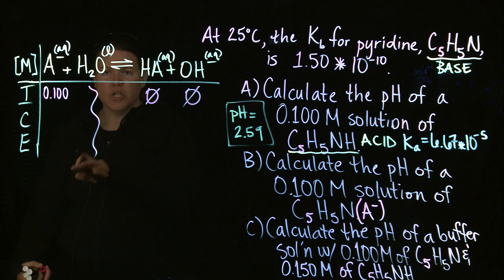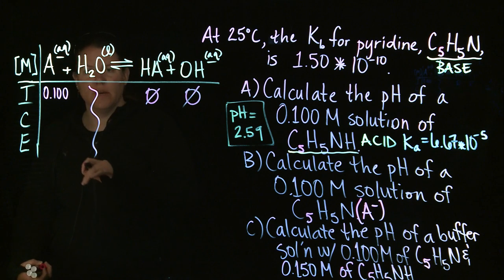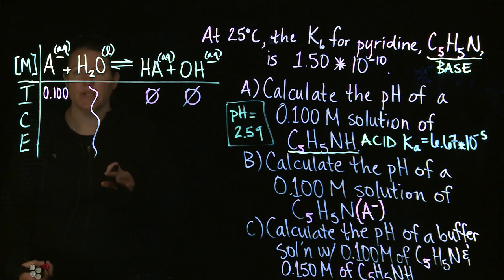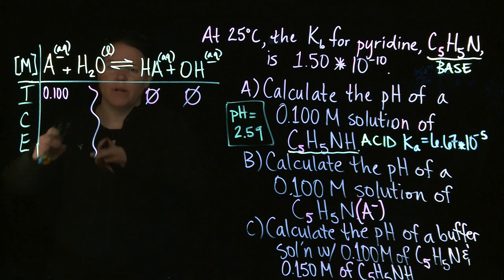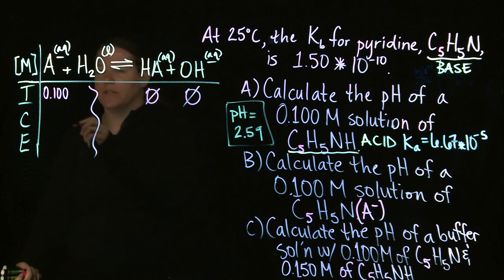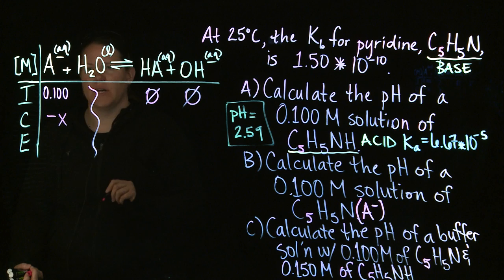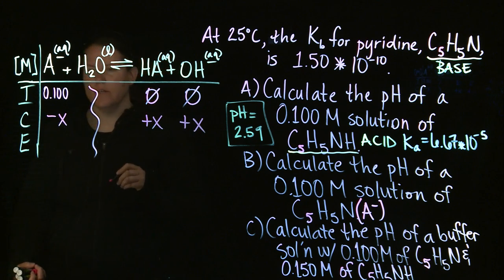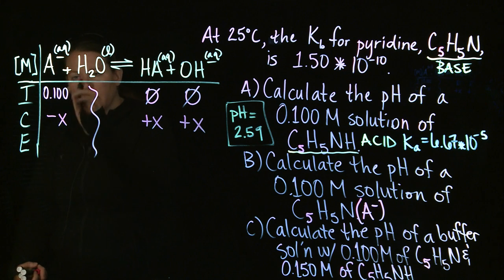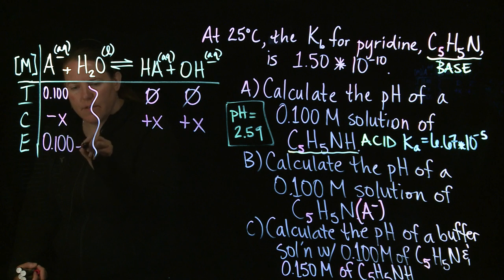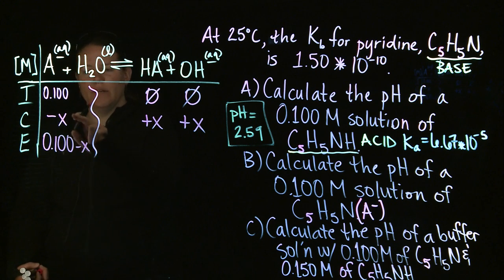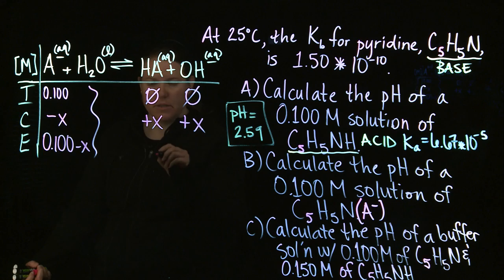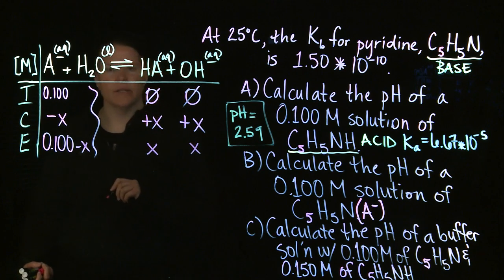If I started off on the reactant side with 0.1, then I'm assuming that I started off with 0 on this side, on the product side. C is the change in terms of x. It's the number of, it's the coefficient numbers of x's. And you're going to subtract it from the reactant side, add it to the product side. Subtract out minus x here. Add in plus x to both of these. And then E is just the summation. The adding of I and C. So add 0.1 and minus x. You get 0.1 minus x. Add 0 and plus x. And you get x and x.